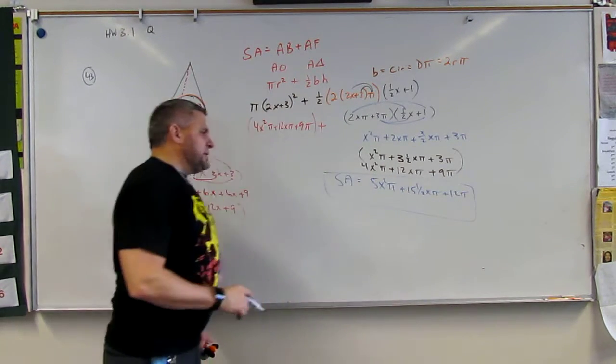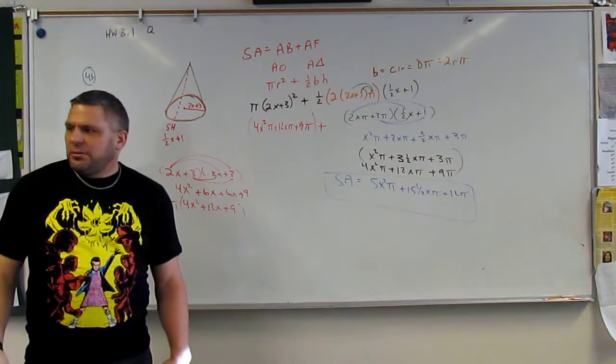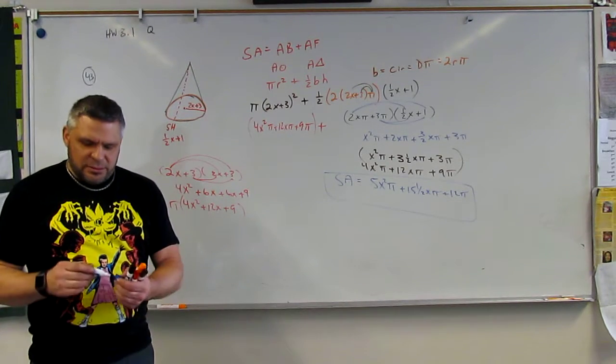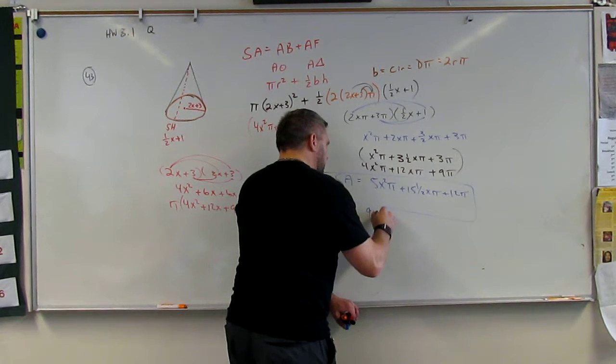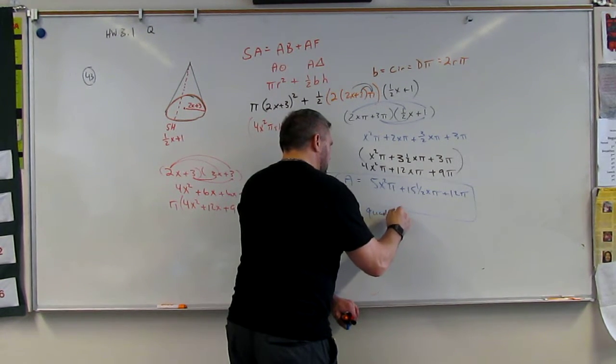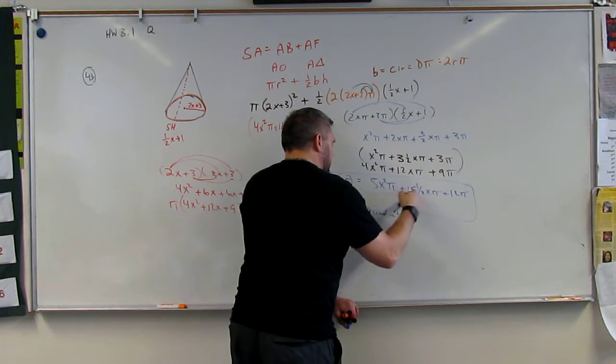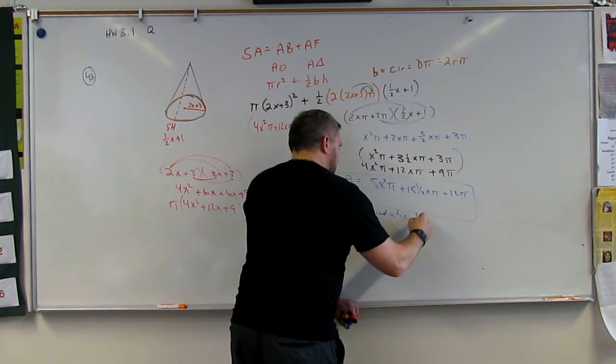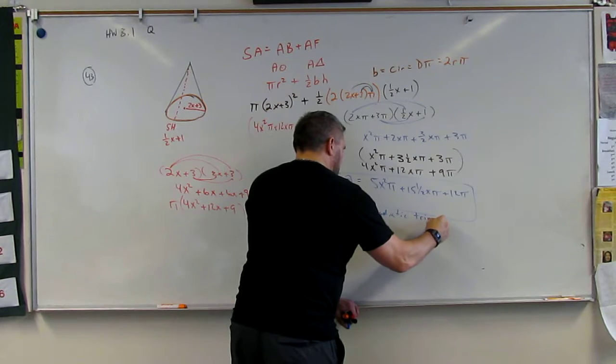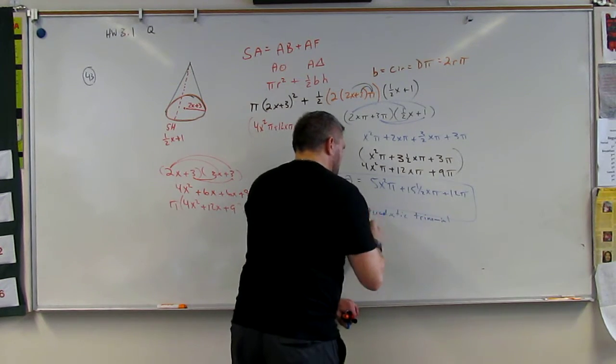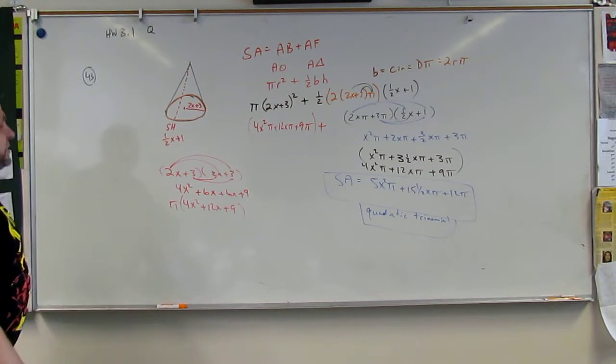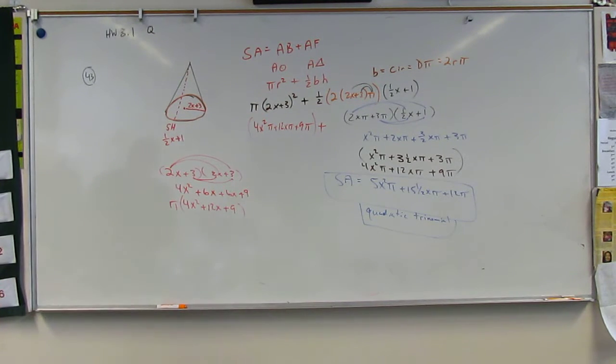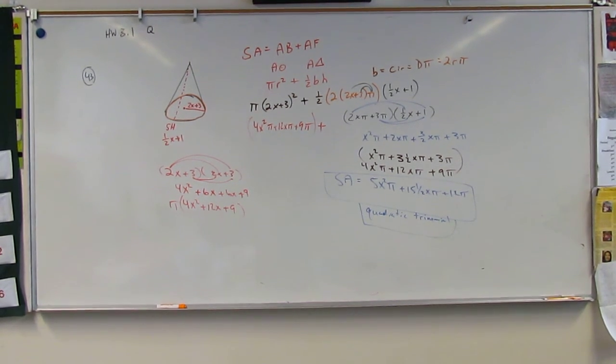Now, what kind of polynomial is that? That'd be a quadratic. How many pieces? Trinomial. Much better, 43, a little cleaner. A little slower. Here we go.